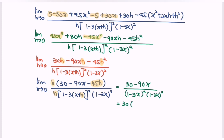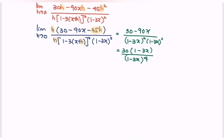So we have 30 bracket (1 minus 3x) over 1 minus 3x to the power of 4. Simplifying the situation, one factor of (1 minus 3x) cancels, and we obtain 30 over (1 minus 3x) to the power of 3. That is the first derivative, f prime of x.